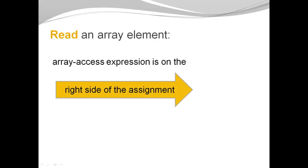If you want to read an array element, you place the array access expression on the right side of the assignment. For example, if I want to know the current value of the third element in my array, I place myArray[2] on the right side and assign the value to a variable, for example, number.